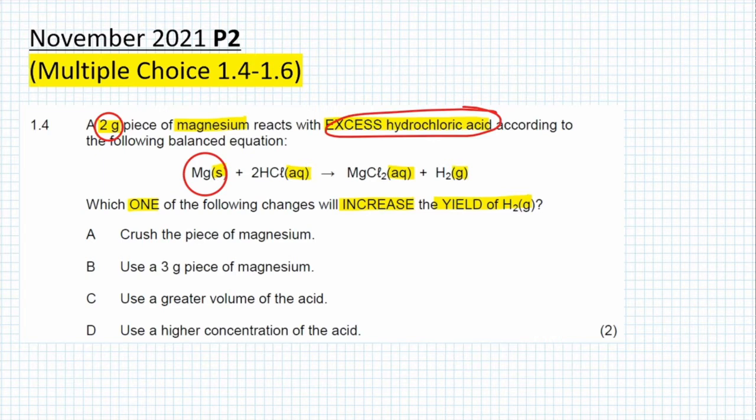If the hydrochloric acid is in excess and it is only the magnesium and hydrochloric acid that are reactants, then we know that the magnesium is the limiting reagent. The amount of magnesium used is going to limit how much product we can produce and therefore how much hydrogen gas will be produced.